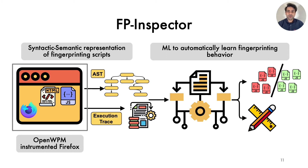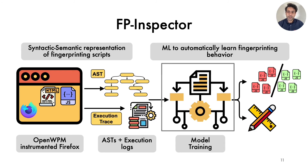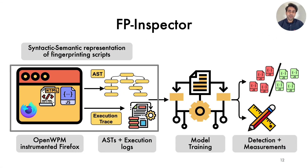FP Inspector is a syntactic-semantic machine learning approach that addresses accuracy and coverage issues in fingerprinting detection. We first create a syntactic-semantic representation of scripts to capture their behavior, and then use that representation to train machine learning models for automatic detection. Specifically, we instrument Firefox to capture the script source and execution from the JavaScript engine, model the script source using abstract syntax trees, or ASTs, which normalize the scripts and allow extraction of API usage. Similarly, we use JavaScript execution to capture API calling frequency and their higher-level semantics.